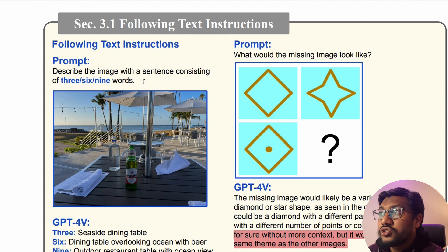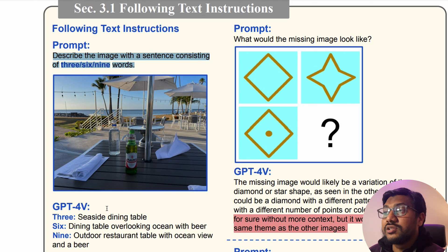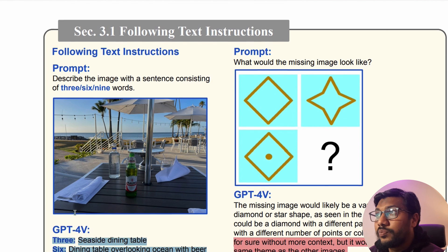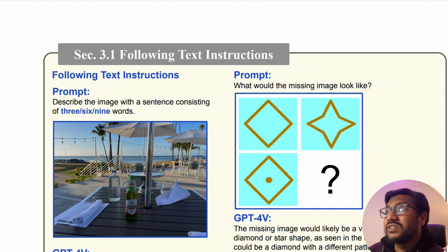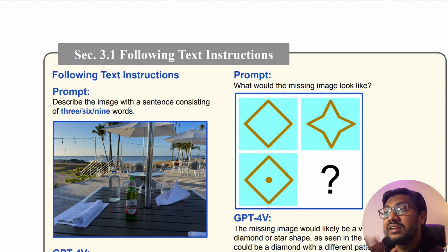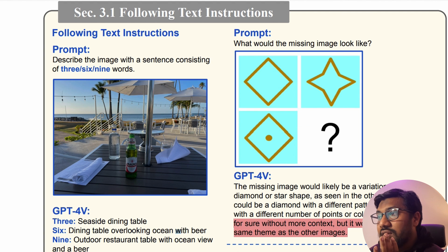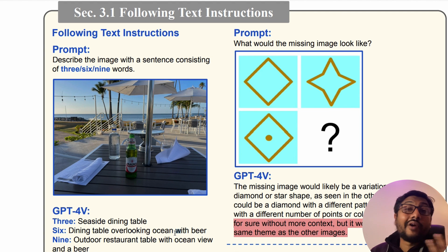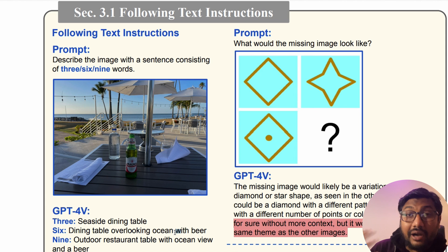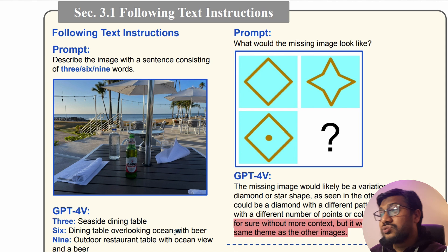Once you upload the image and prompt this, GPT-4 vision is going to give you all three outputs. You can see how it follows the instruction very diligently — three words, six words, and nine words. This is quite helpful, especially if you're writing marketing copy or copywriting. So this is super helpful.